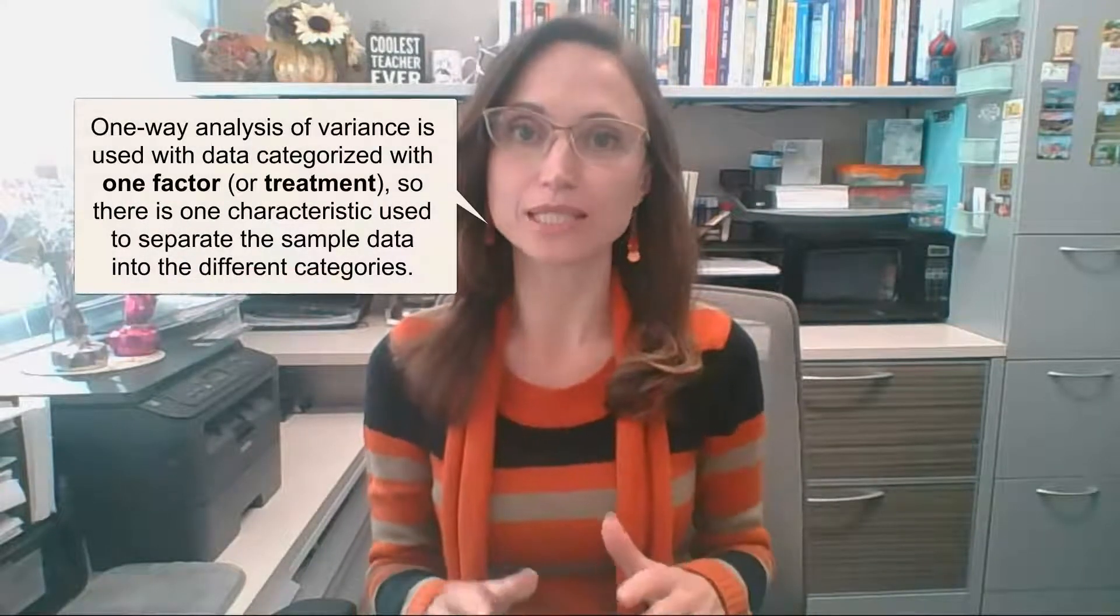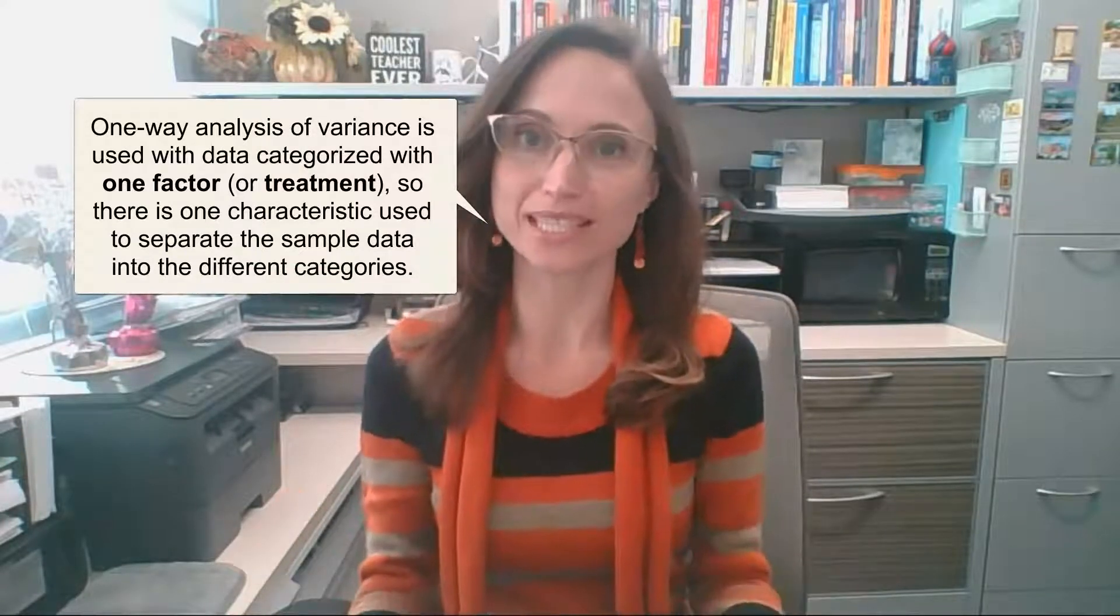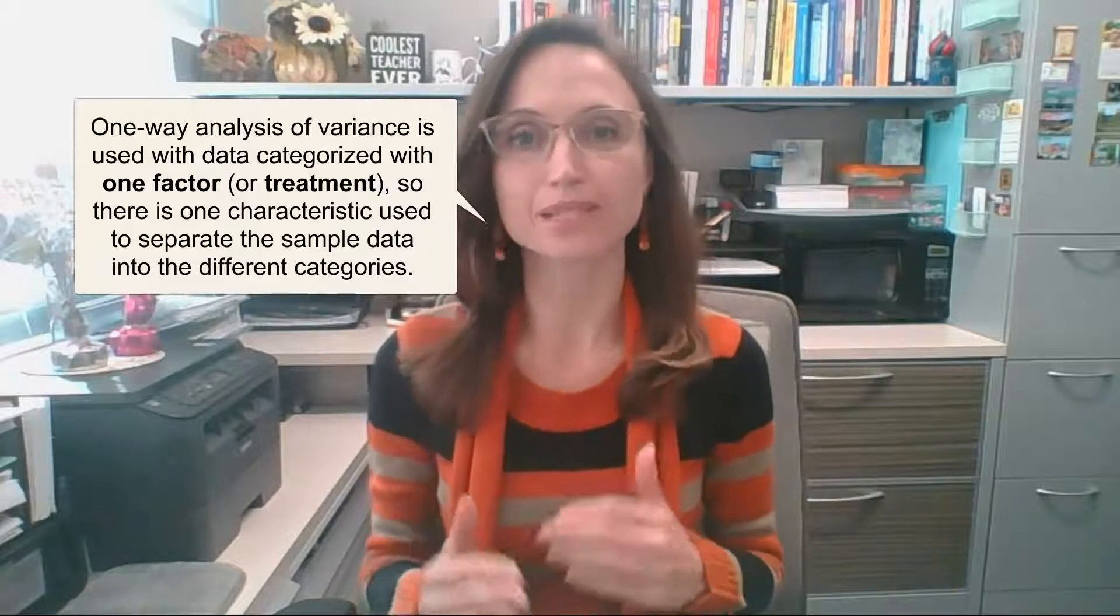In this video we will learn about one-way ANOVA analysis of variance which is used for tests of hypothesis that three or more populations have means that are equal by analyzing sample variances. It is called one-way ANOVA because we use data categorized by one factor or treatment, so there is one characteristic used to separate the sample data into different categories.